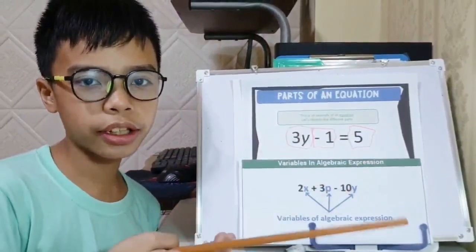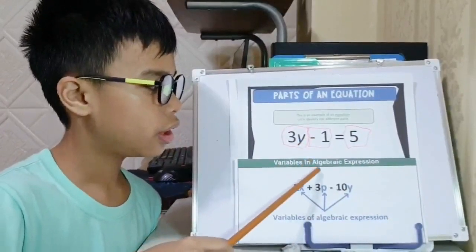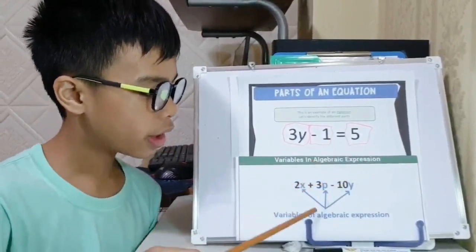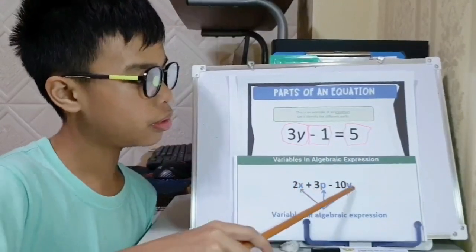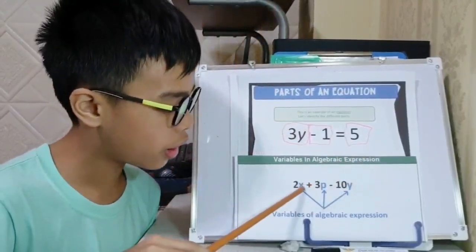Let's see some examples. In this algebraic expression, as you can see, the variables are represented in blue. As you can see, they represent an unknown number.